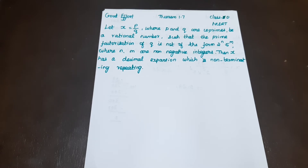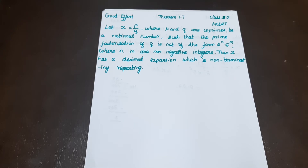Such that the prime factorization of q is not of the form 2 raised to the power n, 5 raised to the power m, where n and m are non-negative integers. Then x has a decimal expansion which is non-terminating repeating.